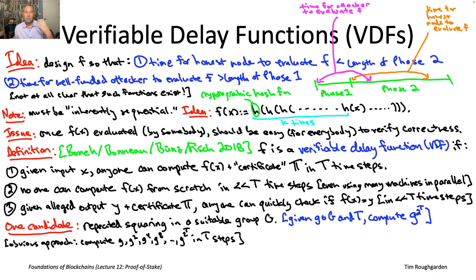Take the group operation on G with itself to get G squared. Take the group operation with G squared with G squared to get G to the fourth, and so on. So just generate powers of two in the exponent until you get up to G raised to the two to the T.